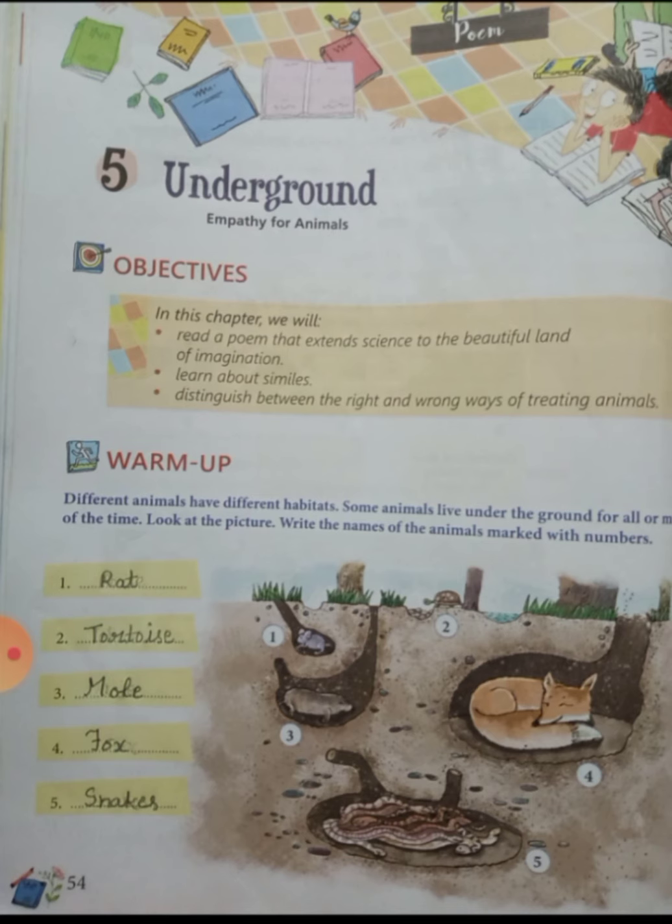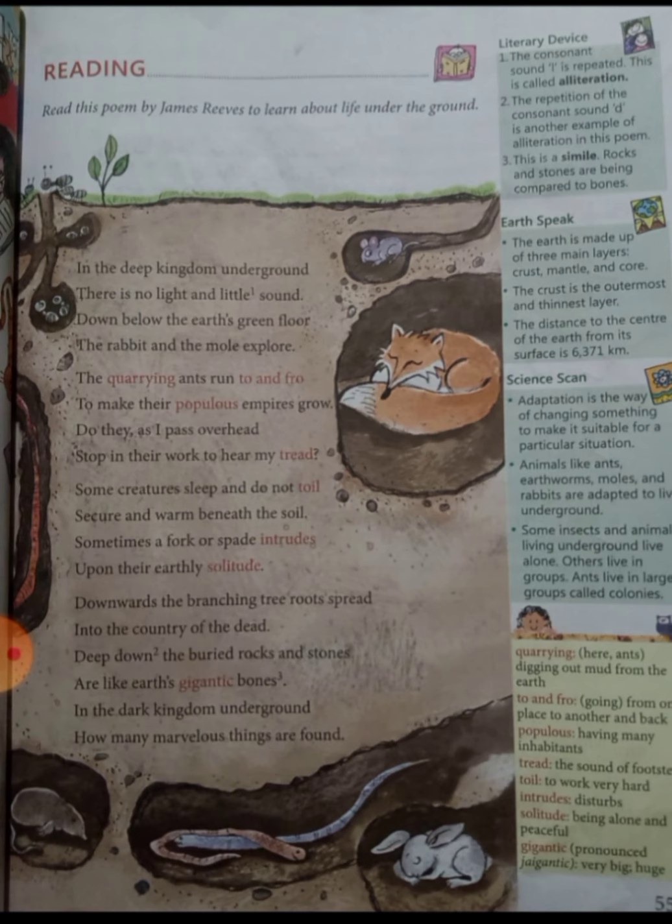Some examples of underground animals are: rat, toad, snails, mole, fox, snakes — and some more examples are given on the second page.